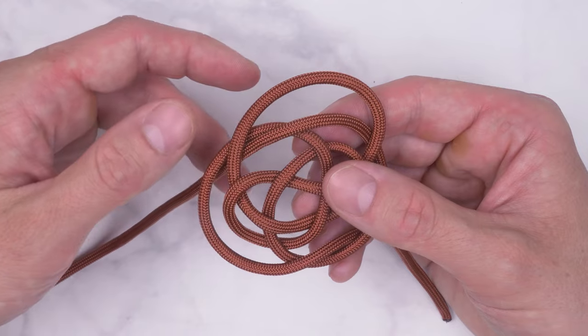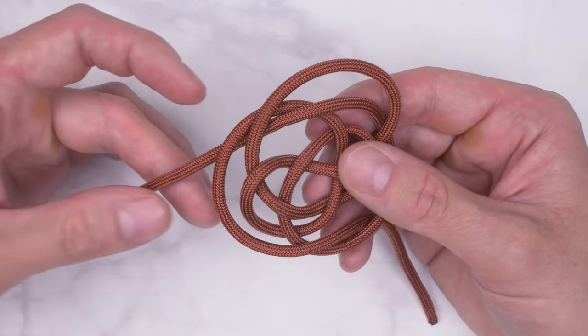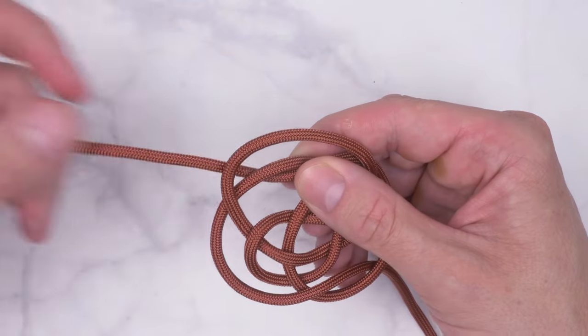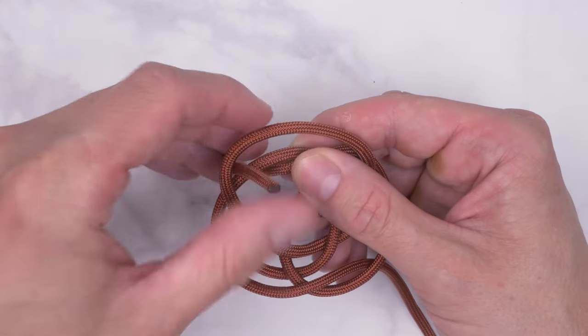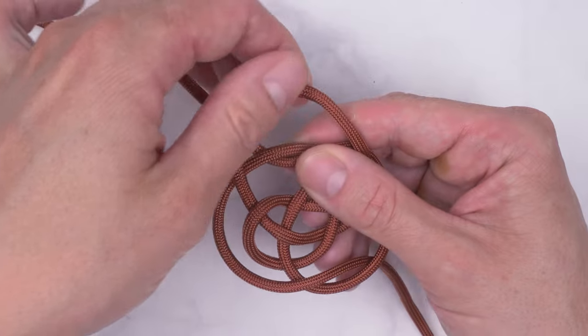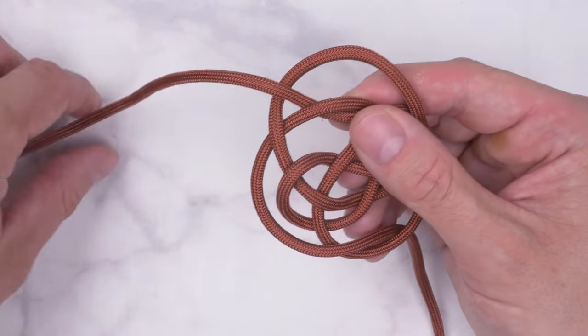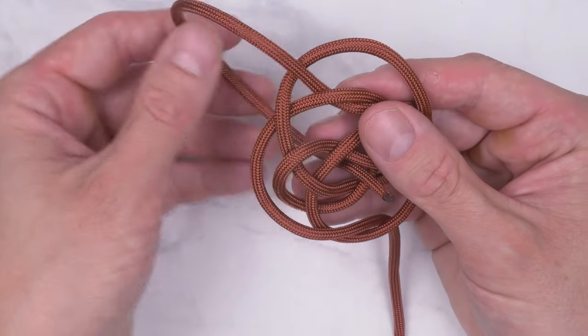And finally, using this end, we pass over this part of our loop, then through the center of the carrick bend.